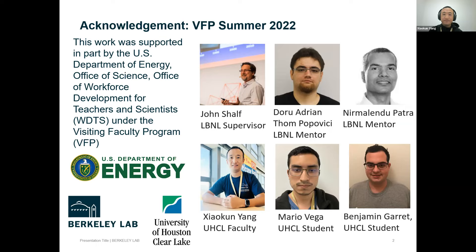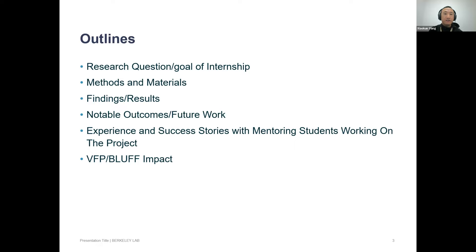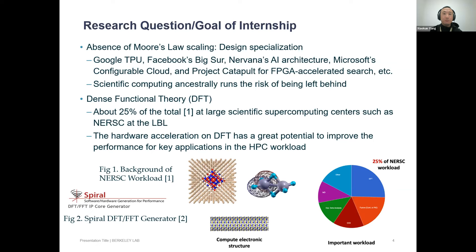My topic is based on the following sections: first I'll go over the motivation, then the design and methods, then the results and outcomes, and finally the impact. So let's start. As you may know, Moore's Law is coming to an end due to physical limitations at the device level — below two nanometers. There are many existing solutions for continuing to improve computation speed, and that improvement has never stopped. Design specialization is one of the main options.